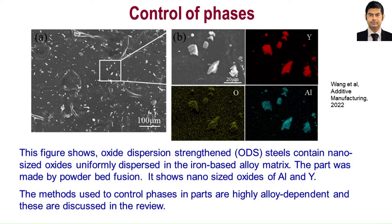These steels have excellent strength and high-temperature creep strength owing to the dispersion strengthening of the oxide particles as well as the solid solution strengthening of the iron-based alloy matrix. The methods used to control phases in parts are highly alloy dependent, and these are discussed in the review.